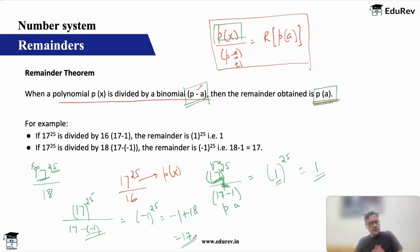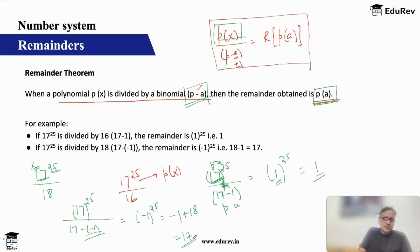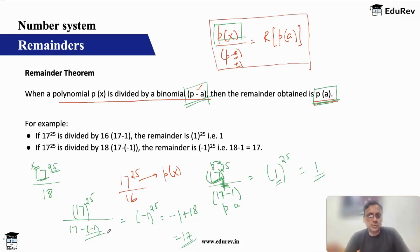So this is what is the remainder theorem — very simple in case it can be applied. It cannot be applied in all cases, but I will show you methods where you will be able to apply it in a lot of cases. Clearly, your divisors are 16 and 18 — too large to apply cyclicity. This can be done by cyclicity also, but the divisor is too large and your dividend is not a single digit but a double digit number. That is where it gets complicated, and hence cyclicity is not advisable. Remainder theorem works best.